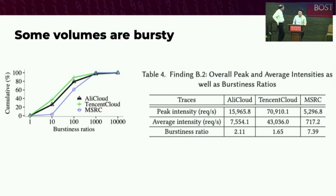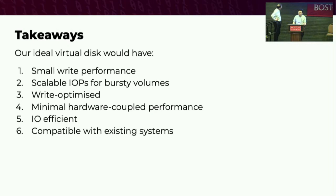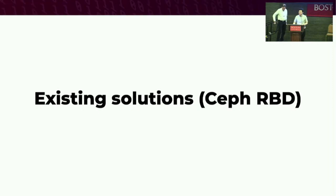A disk might have an average throughput of 1,000 IOPS and scale up to 100,000 IOPS at peak. In aggregate, Alibaba reports a 2-to-1 peak-to-average ratio and Tencent Cloud reports roughly 1.6, while Microsoft Research Cloud from years ago had 7-to-1. So our ideal virtual disk would have very good small write performance, would be scalable for burstiness scenarios, optimized for writes primarily, and would be compatible with and quite efficient compared to existing systems.